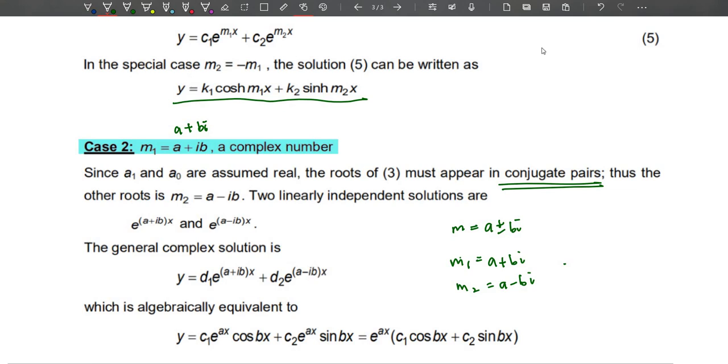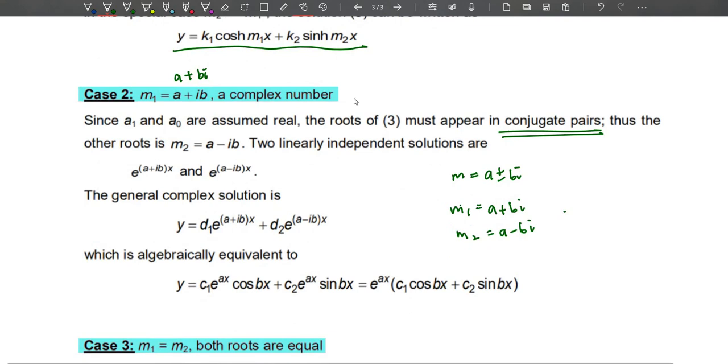But it is algebraically equivalent to this: y = e^(ax) times [c_1 cos(bx) + c_2 sin(bx)].